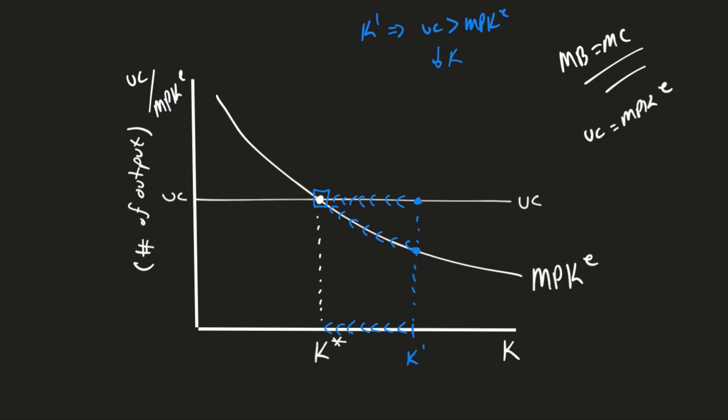The same idea if we have K double prime. At K double prime, we see that the user cost is less than the marginal product of capital. Marginal cost is less than the benefit - benefits up here, cost down here. The way that we maximize profits is we continue to buy capital, because capital is cheaper than the benefit we're getting from it. So we continue to buy it, we're going to move along both of these and get to that profit maximizing point.